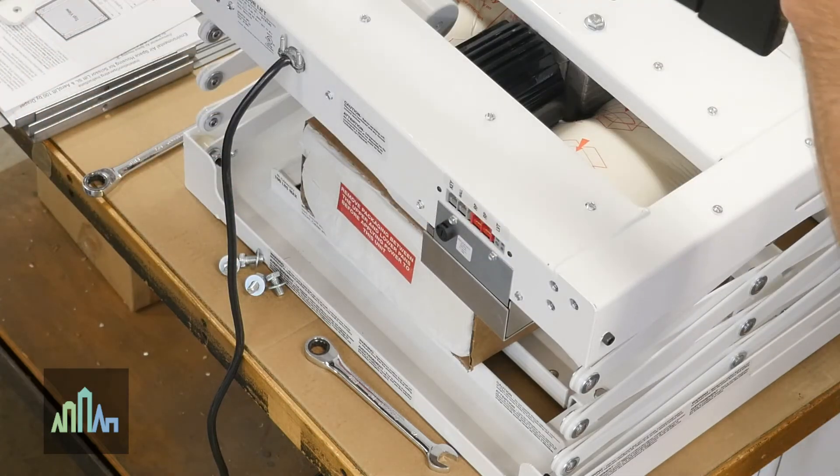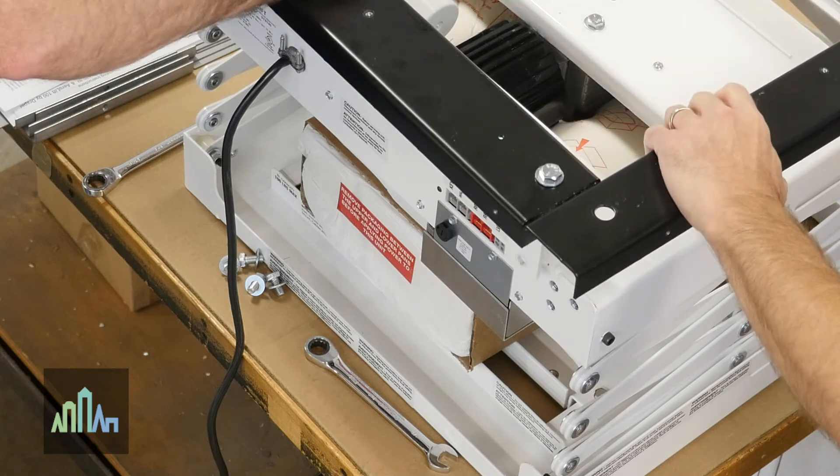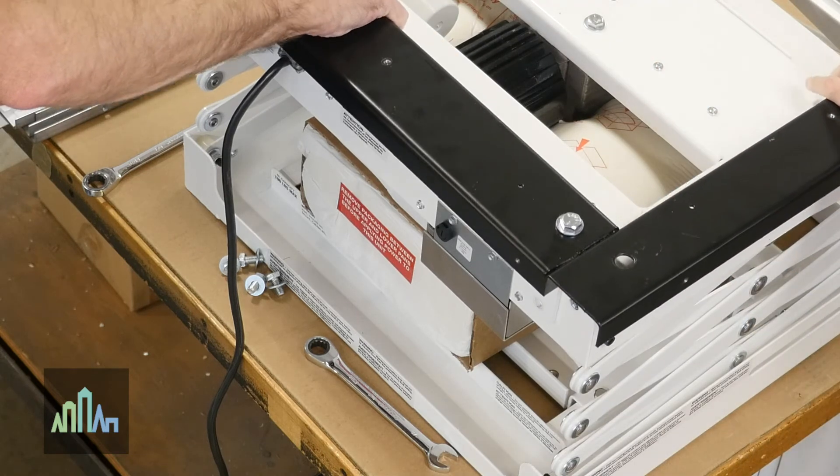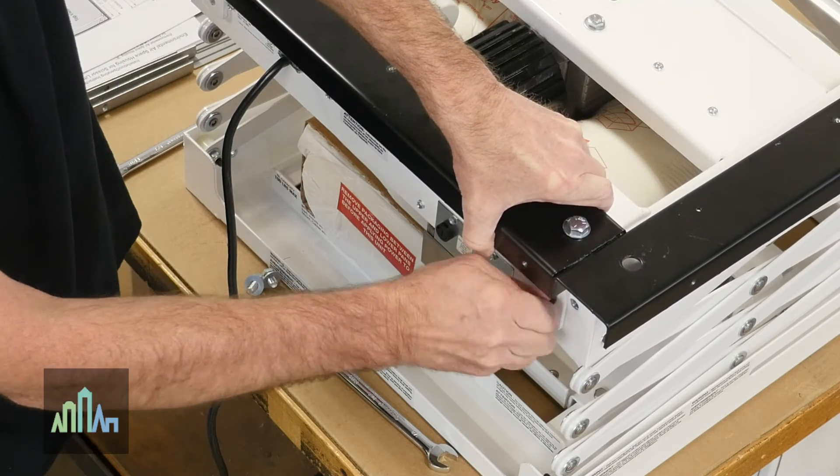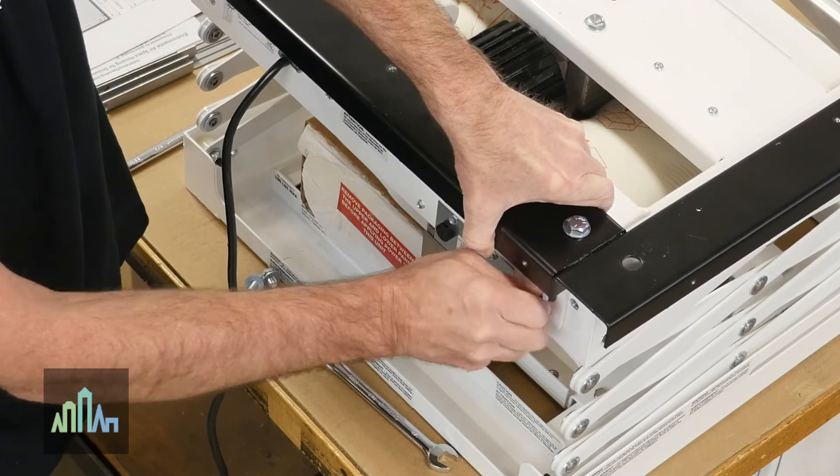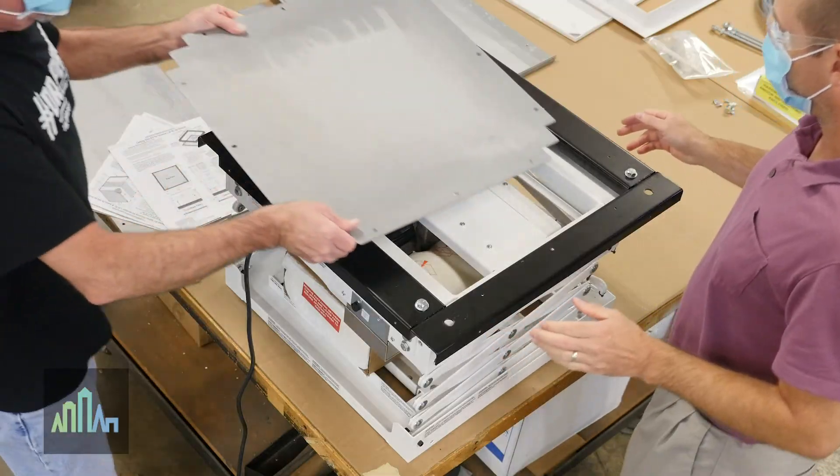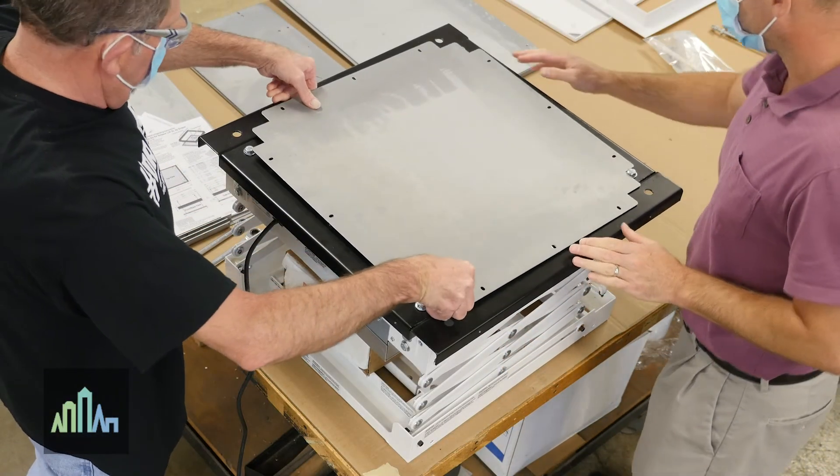Next, attach environmental airspace housing top frame to the top of the ScissorLift with bolts provided. Then install the top panel to the environmental airspace housing frame.